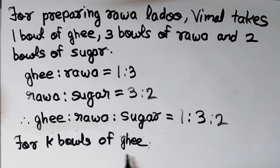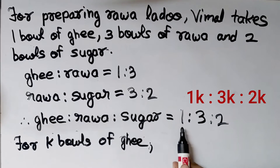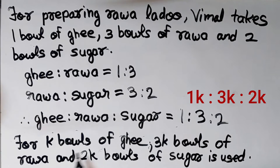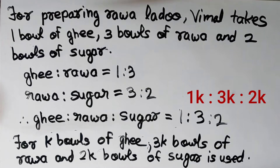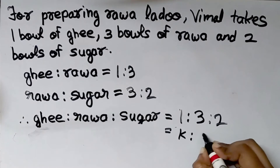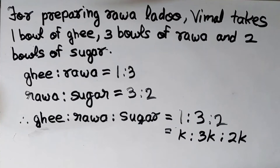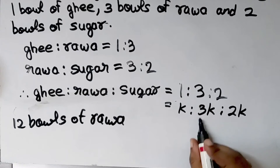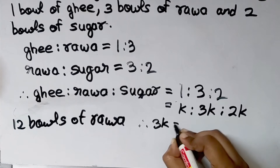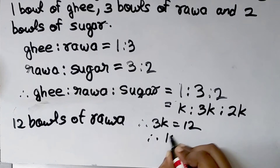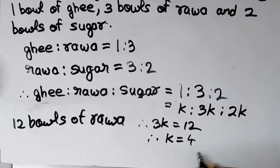For k bowls of ghee, we will multiply all terms of this ratio by k. For 1 bowl of ghee, 3 bowls of rava and 2 bowls of sugar are used. So for k bowls of ghee, 3k bowls of rava and 2k bowls of sugar are required — that is, k is to 3k is to 2k. The question states that 12 bowls of rava are used, so 3k equals 12. Therefore k equals 12 divided by 3, which is 4.